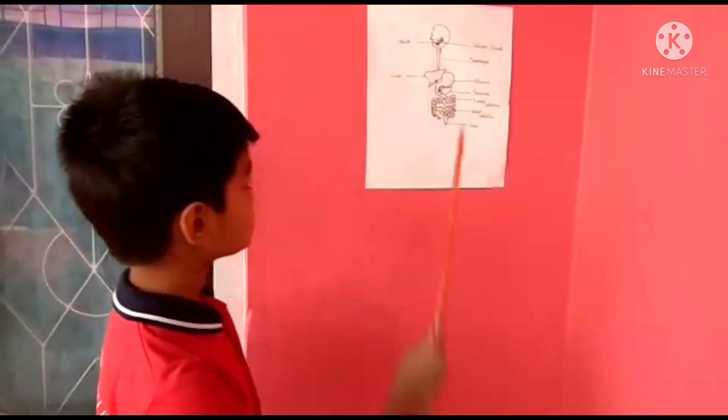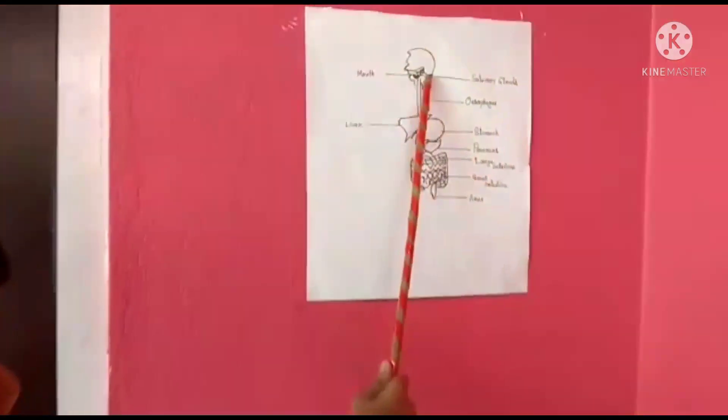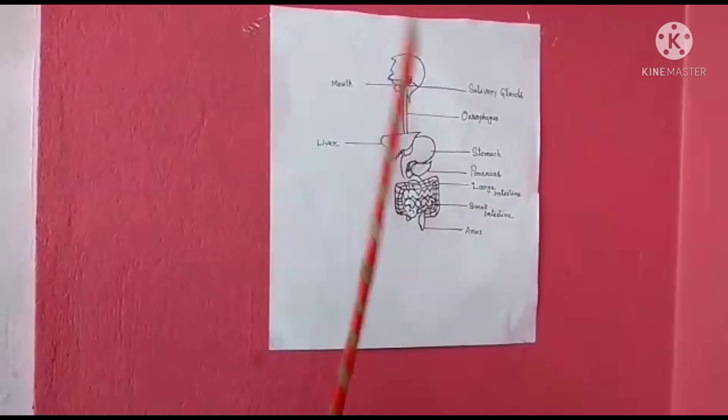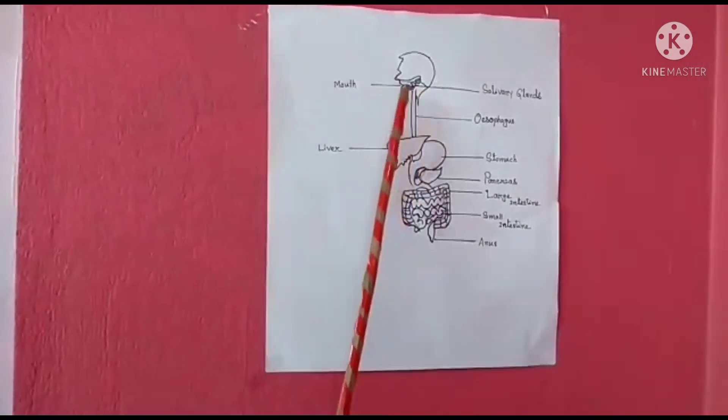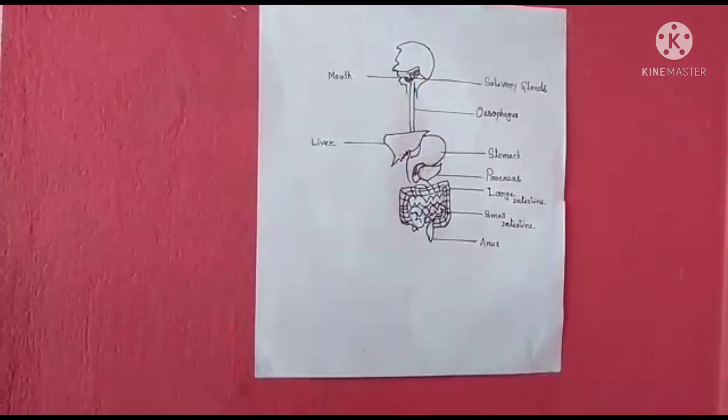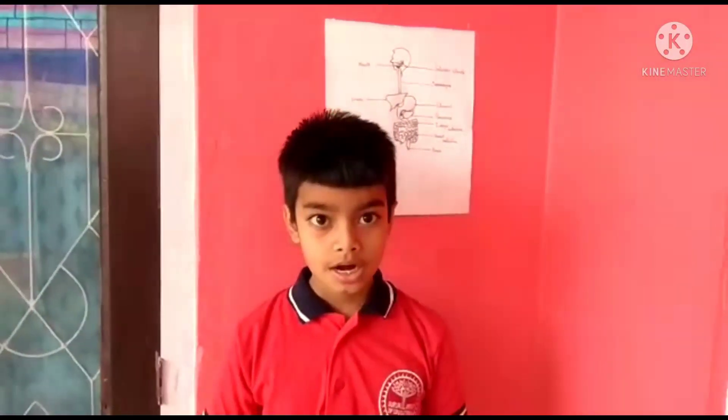The working of the digestive system: first, when we eat food, our teeth chew it. Then our saliva glands produce saliva that breaks down the sugars of the food. Our tongue swallows the food inside. Then it reaches the stomach through the throat or oesophagus.